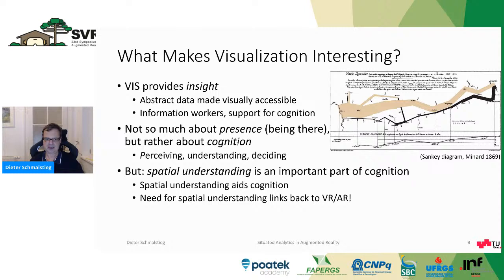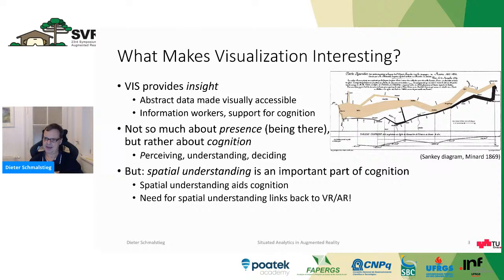This insight is well illustrated by this historical visualization on the right-hand side, drawn on paper in 1869, showing the progress of Napoleon's trip with the French army to Russia — from west to east — and then the retreat from Moscow and all the way back. The width of the lines shows the strength of his troops at any given point in time, giving us a good idea of what was going on historically.